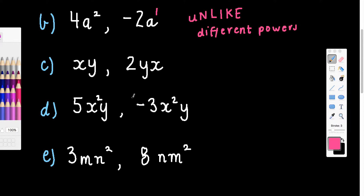This is an interesting one: we've got xy as the first term and 2yx. I definitely have the same letters — x and y — this one's just written the other way around. The powers are the same: all power of 1. Would x times y be the same as y times x? Yes, because these are being multiplied and you can change the order of multiplication and get the same result. So 2yx is the same as writing 2xy, which means these are like terms.